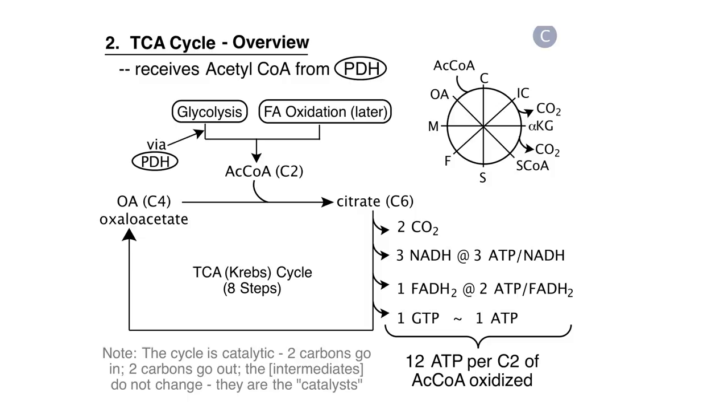One source is glycolysis to pyruvate and pyruvate to acetyl-CoA, as we've seen. The second source is from fatty acid oxidation. Looking at Panel C, the TCA cycle starts with the reaction of acetyl-CoA, a two-carbon compound with oxaloacetate, a four-carbon compound, to form the six-carbon product citrate.